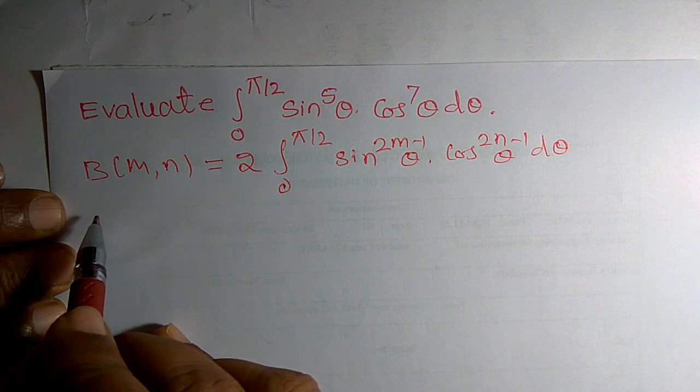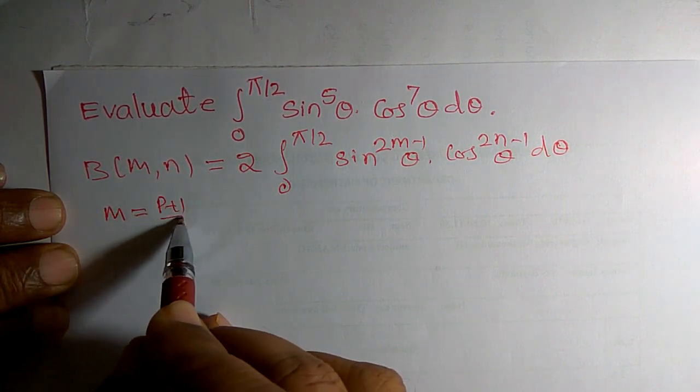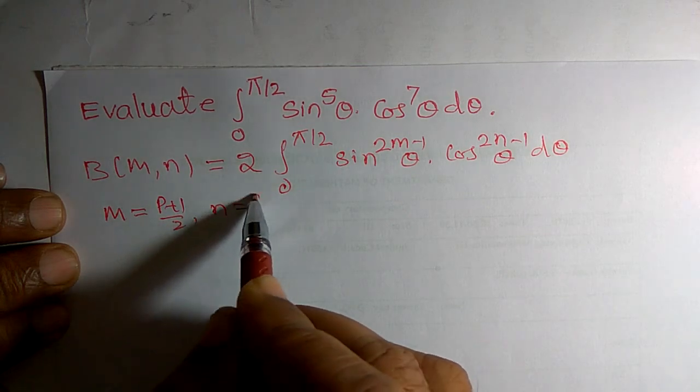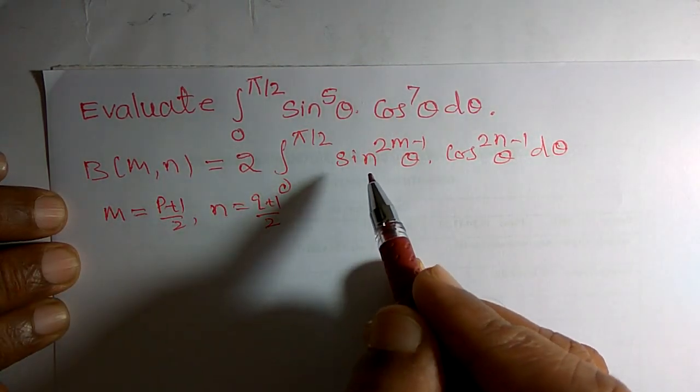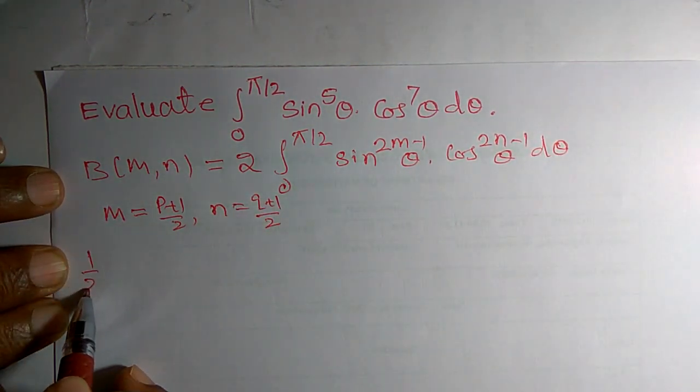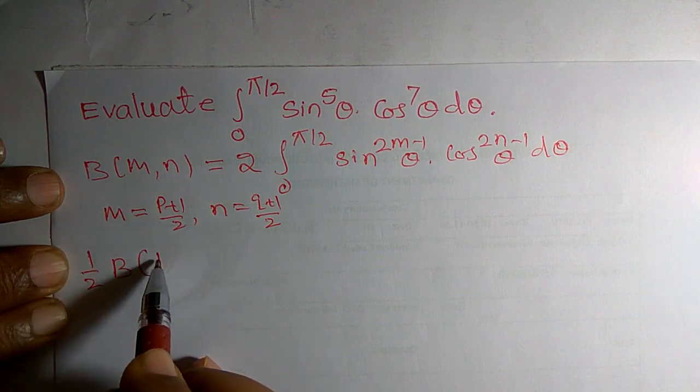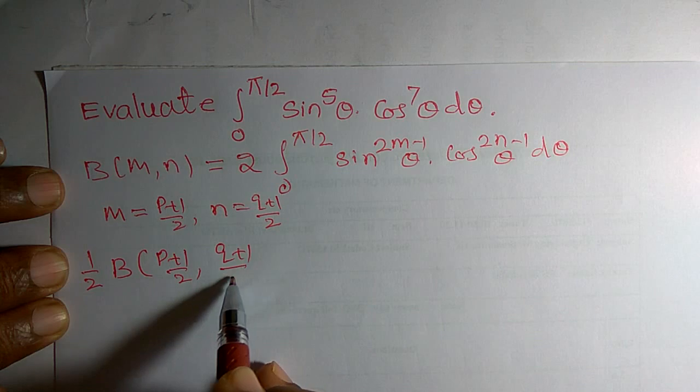Here, I am going to replace m by p plus 1 by 2. Similarly, n by q plus 1 by 2 in the above property.